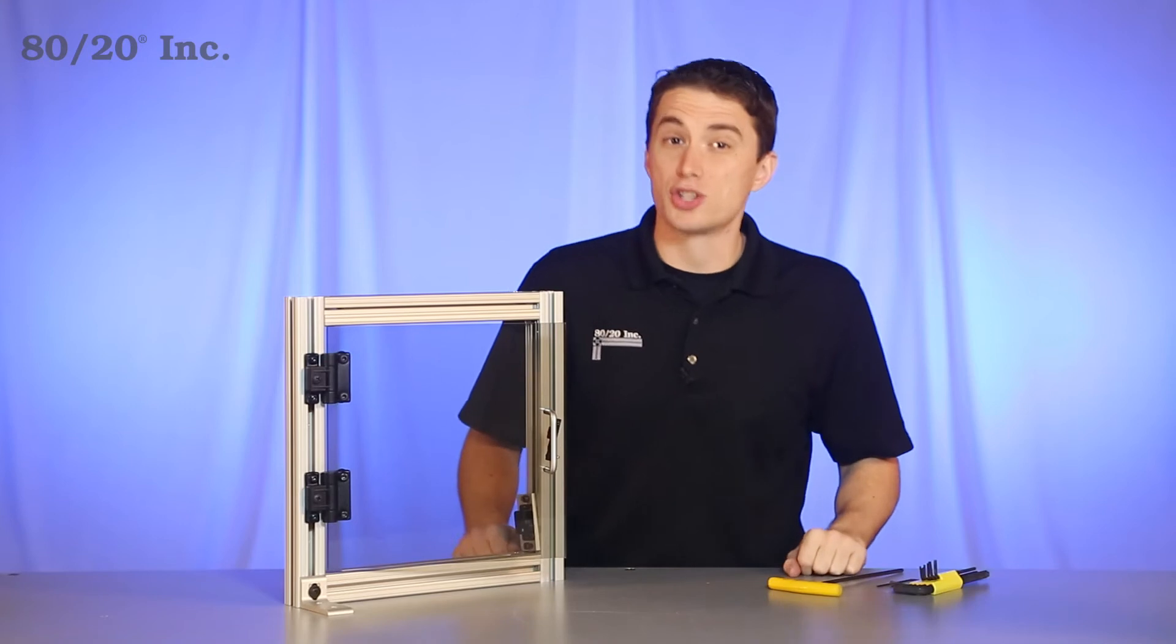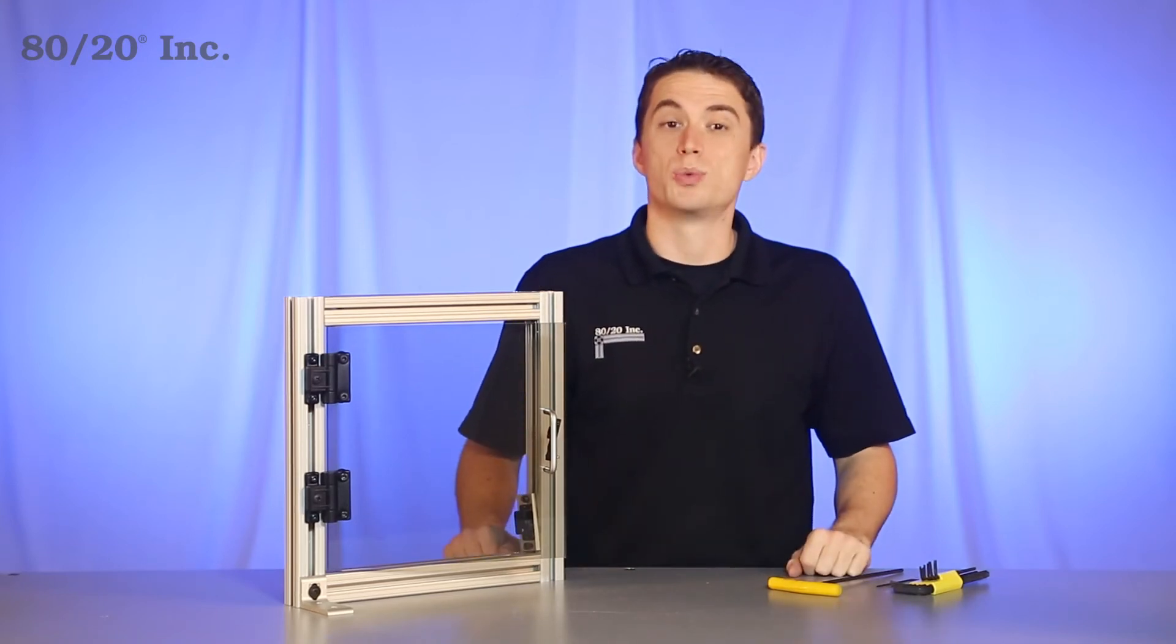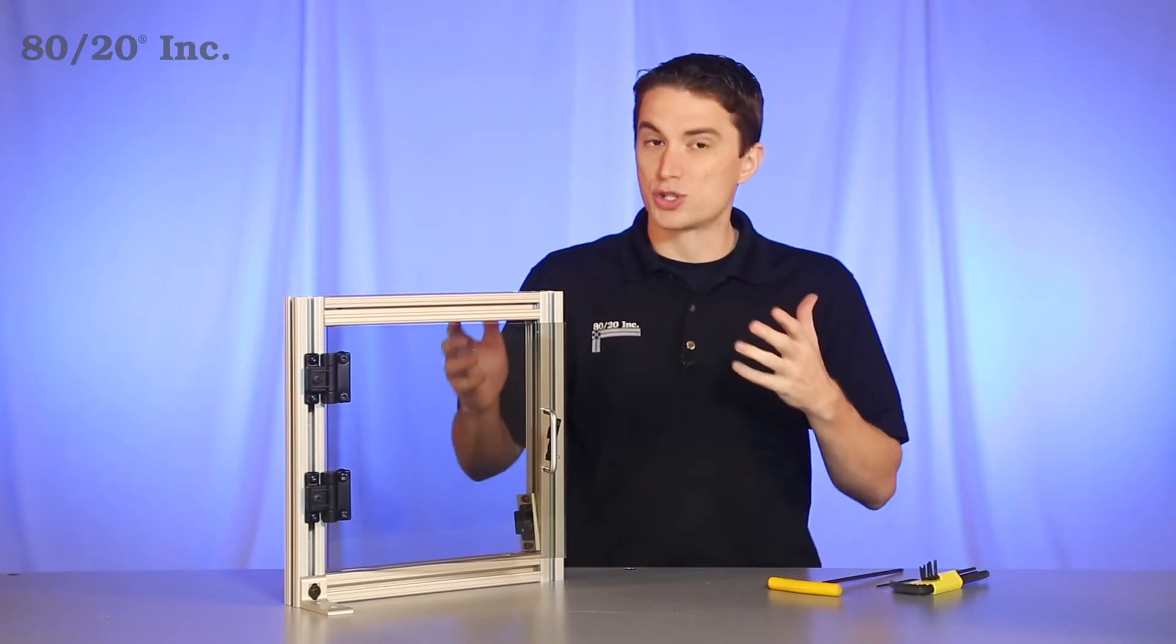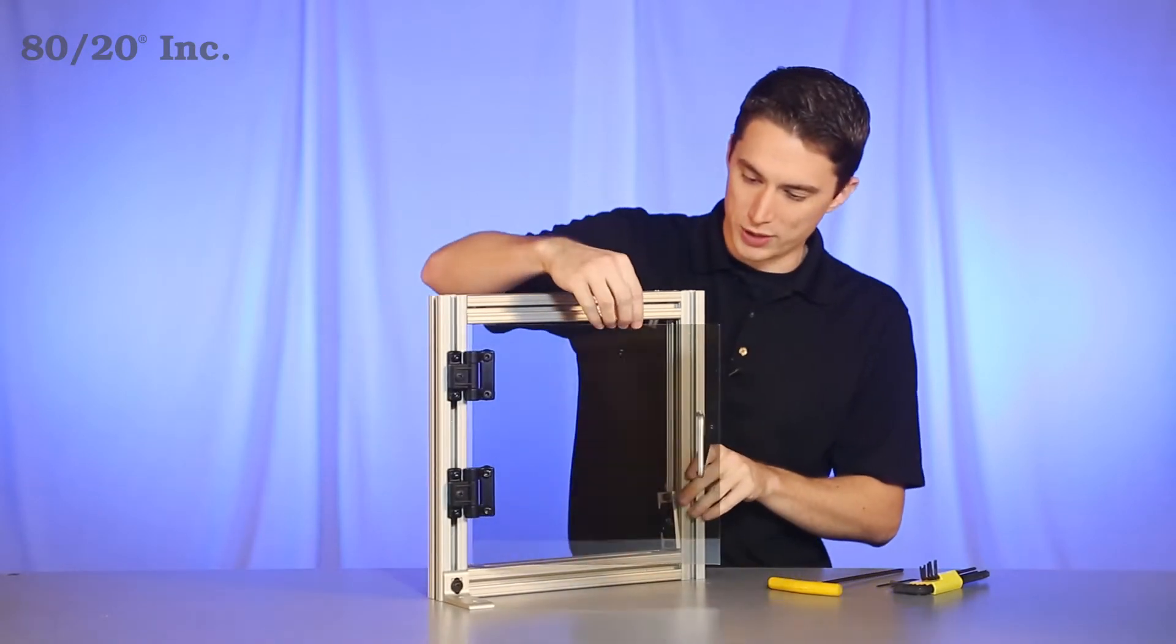Now there's a few different ways you can install the grabber door catch. You can install it for a sliding door or a swinging door. We're going to use a swinging door for our example. So we'll just move this into place and swing the door open.